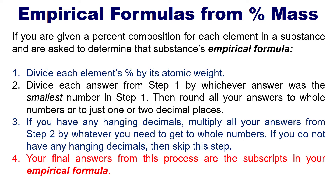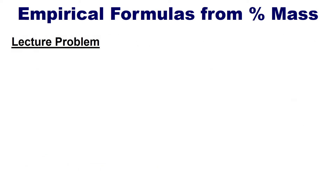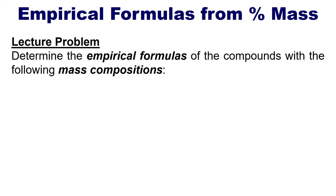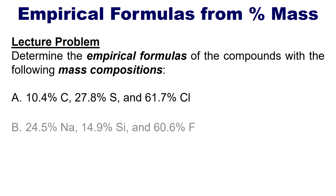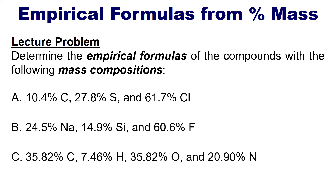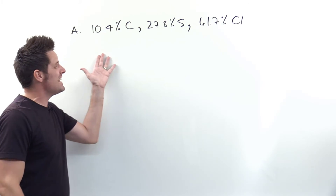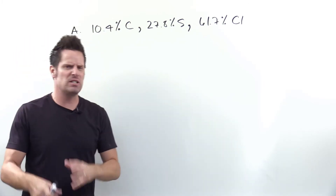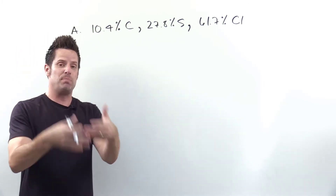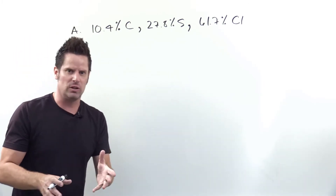I realize that reading all these steps they might seem really abstract. So the best thing for me to do is to show you some examples. I want you to determine the empirical formulas of the compounds with the following mass compositions. I invite you to try this on your own if you know enough of the process to do so, then hit play and I'll show you how. If you're given percentages for a bunch of different elements and asked to deduce the empirical formula, here's what you do.